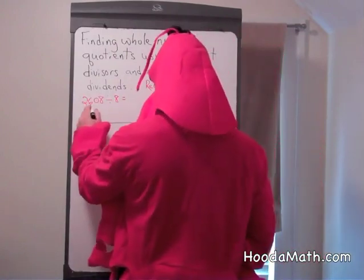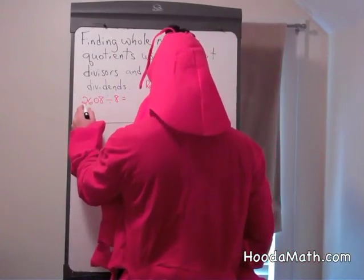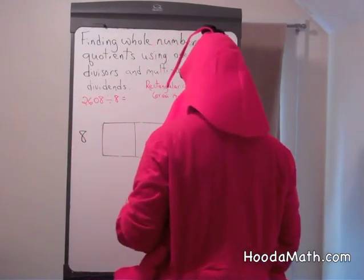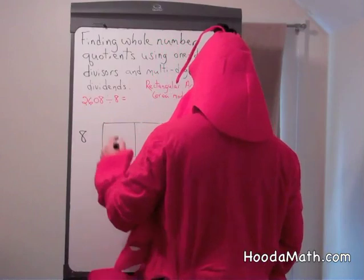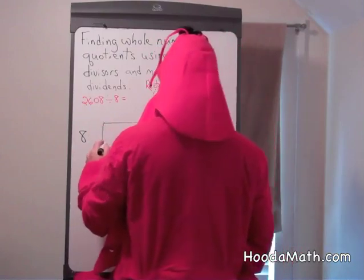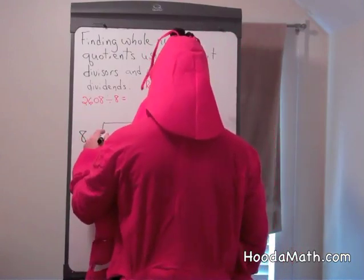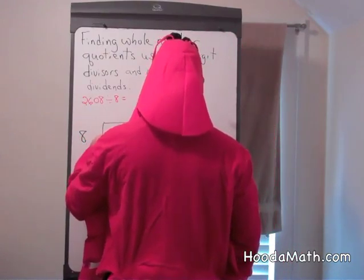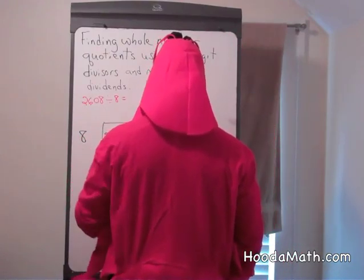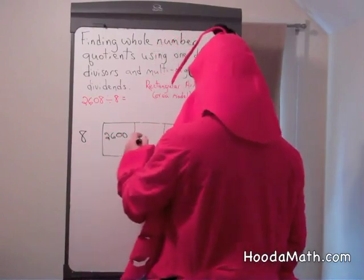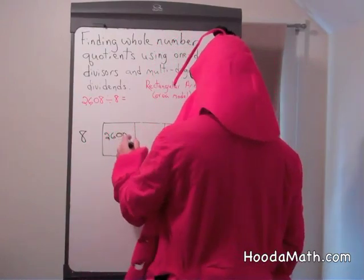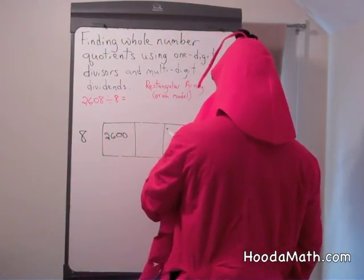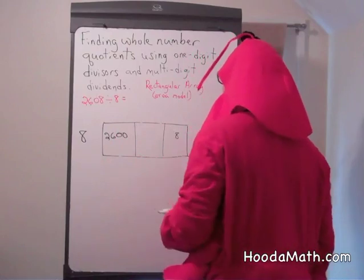We know 8 does not go into 2 or 26 evenly. So we'll put 2,600 — we know there's going to be something left over, we don't know how much — and 8.